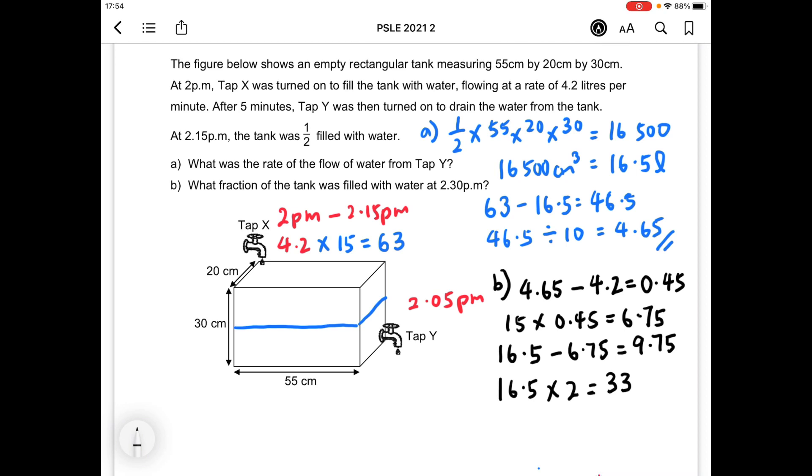At 2:30 p.m., there was 9.75 liters of water in the tank out of 33 liters, which is what the tank can hold. And if you were to keep in this fraction in your calculator, you will get 13 over 44, which is the answer for part B.